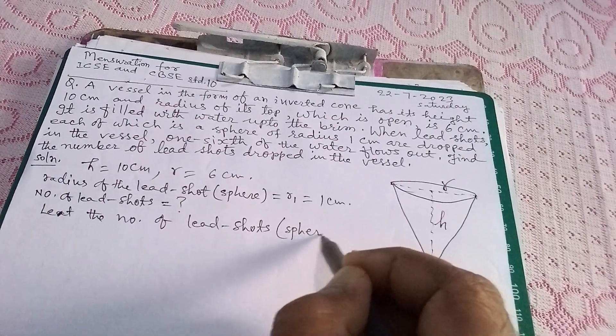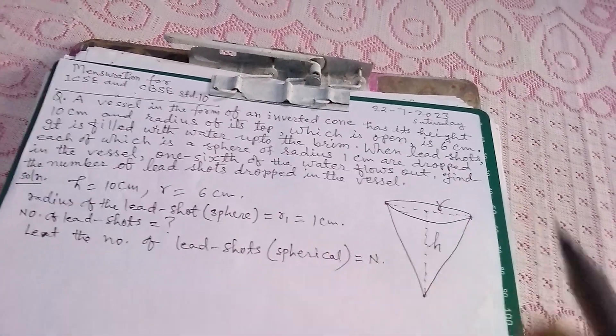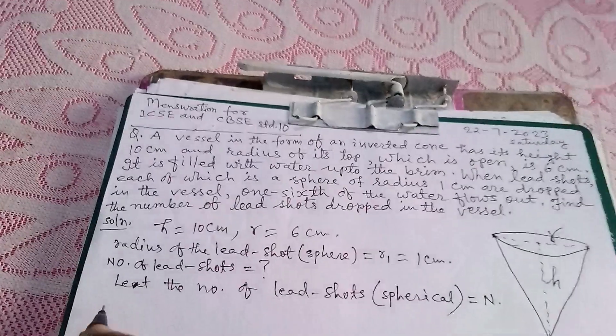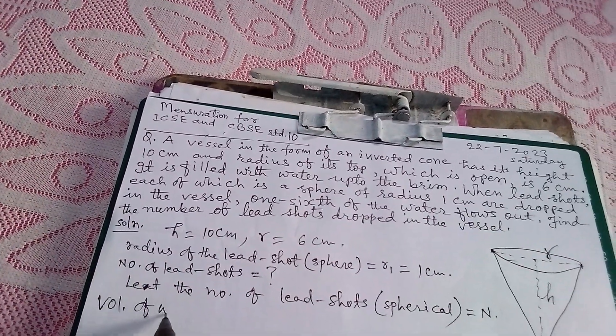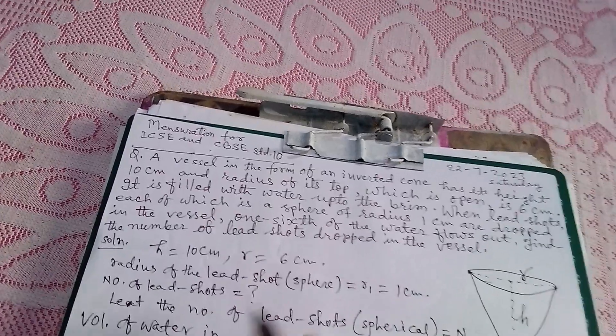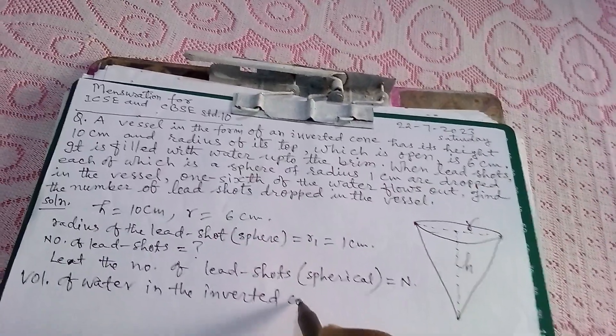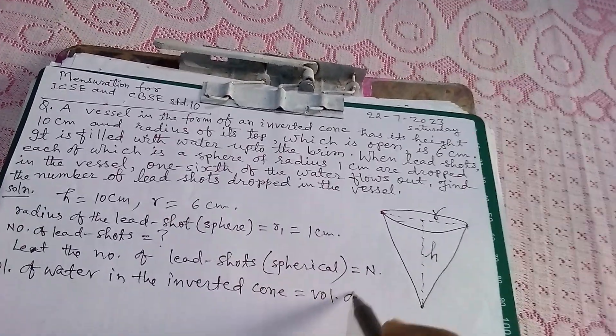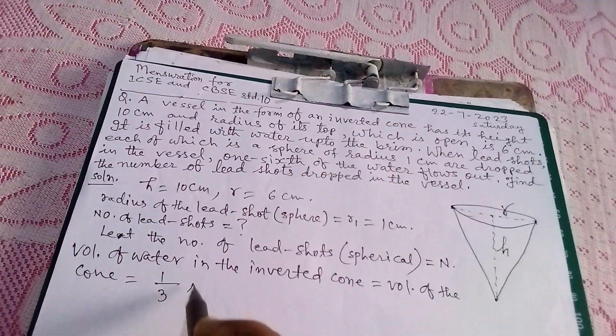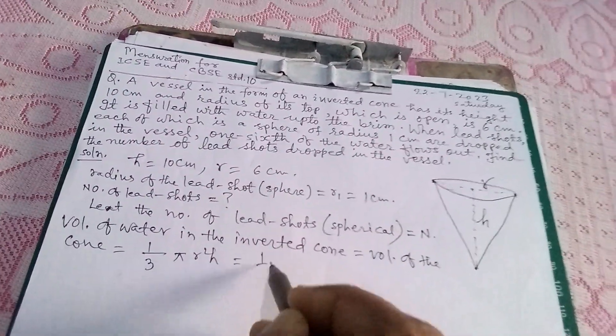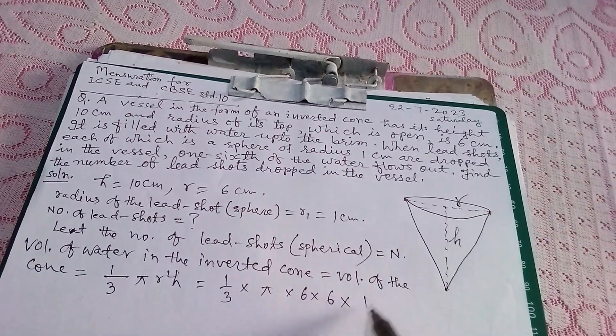I am supposing capital N. So first of all the volume of water in the inverted cone is equal to volume of the cone, that is equal to 1/3 π R² H, so 1/3 π × 6 × 6 × 10, and that is equal to 120π cm³.